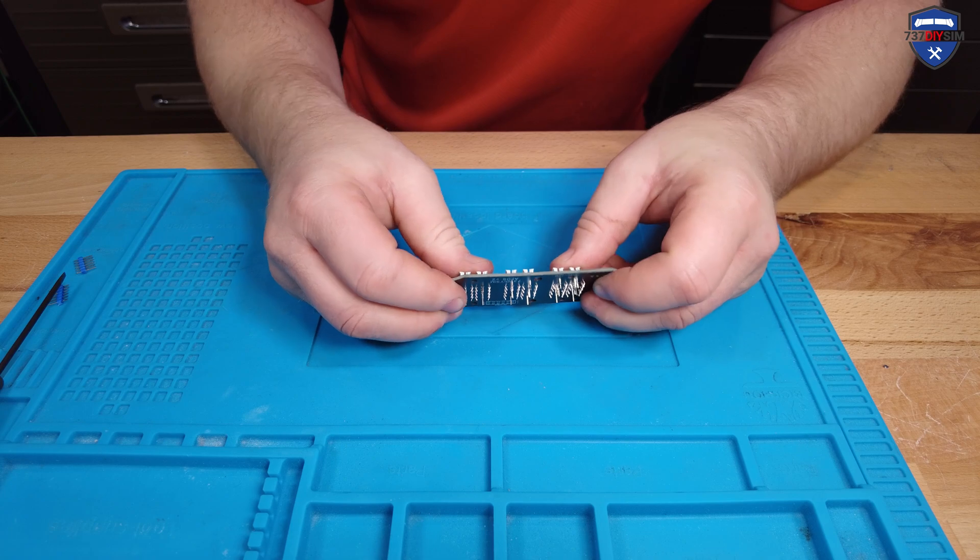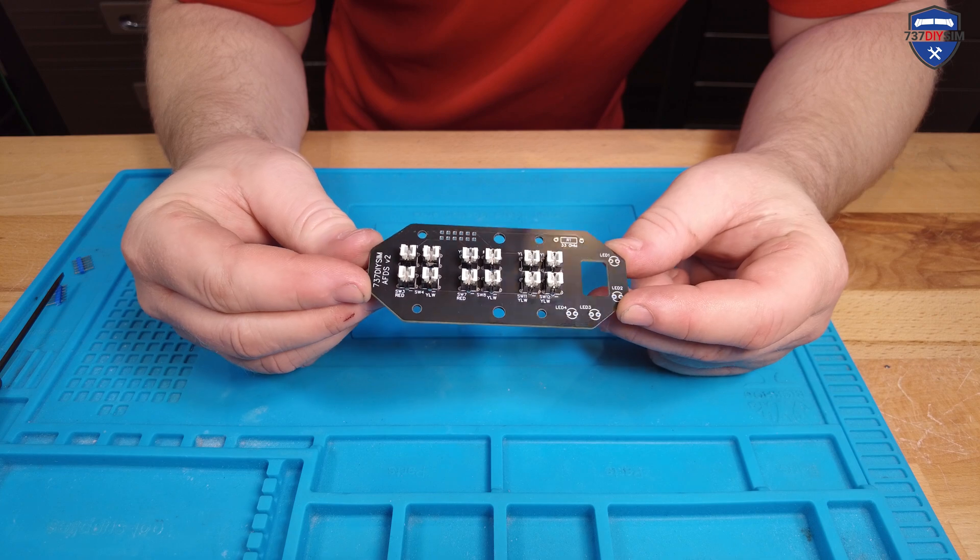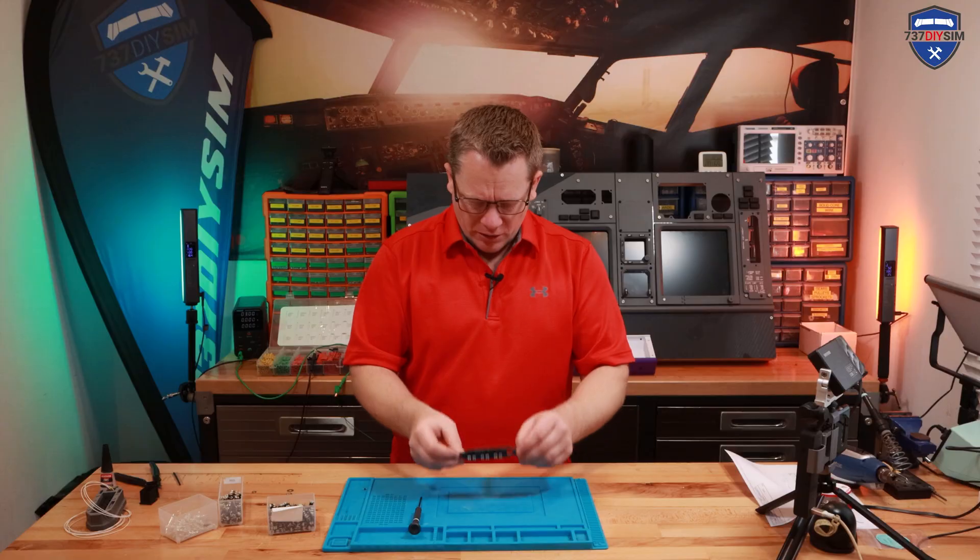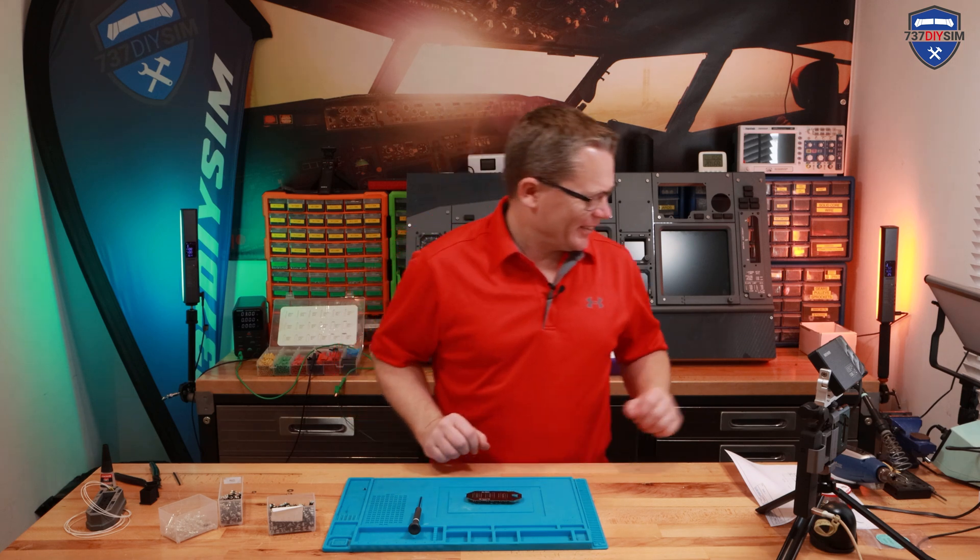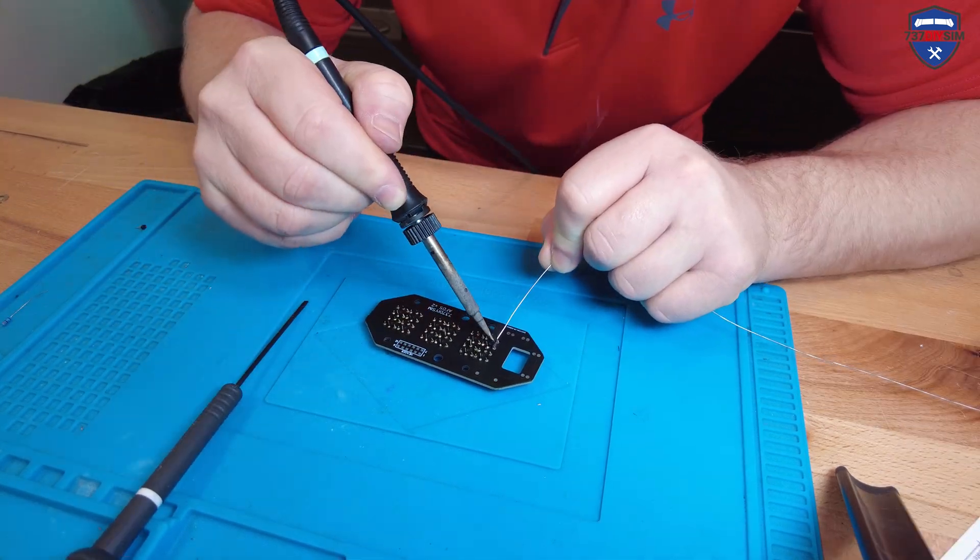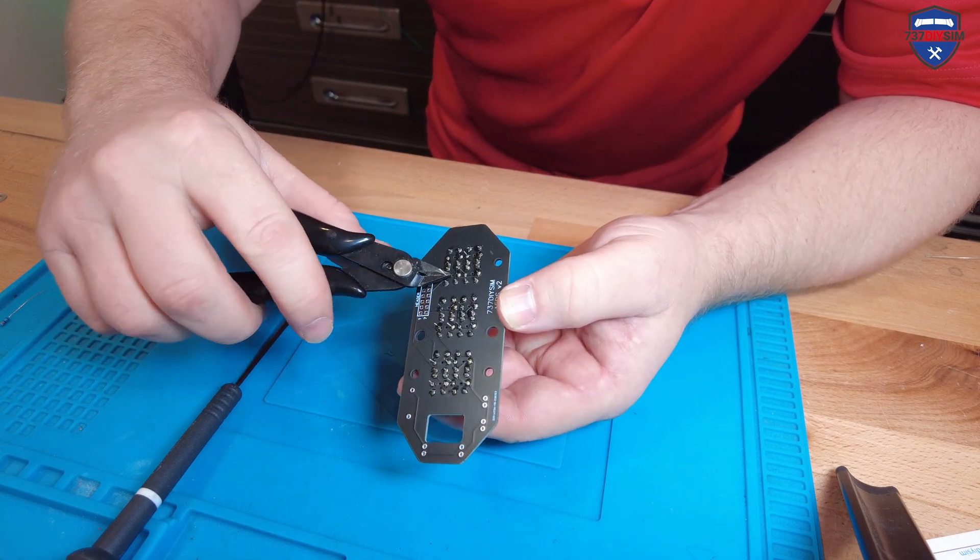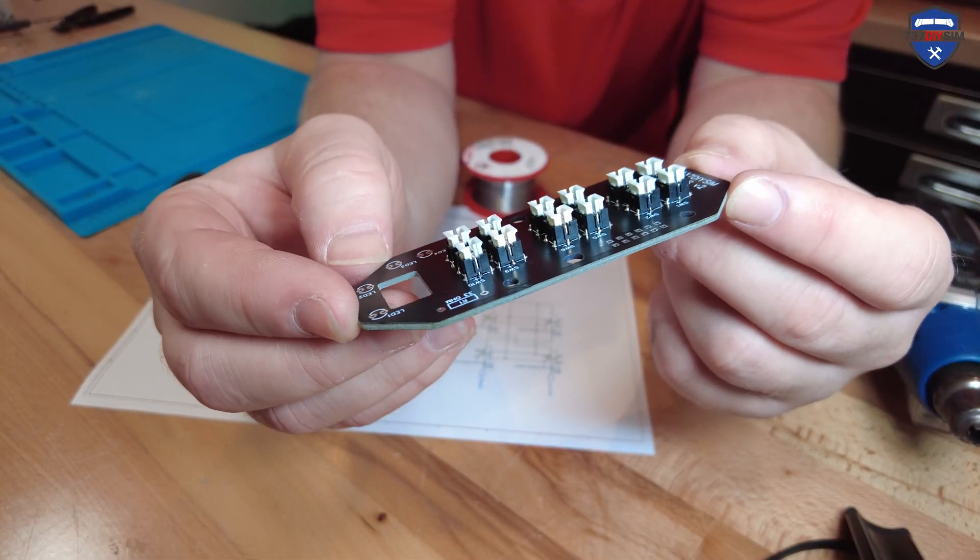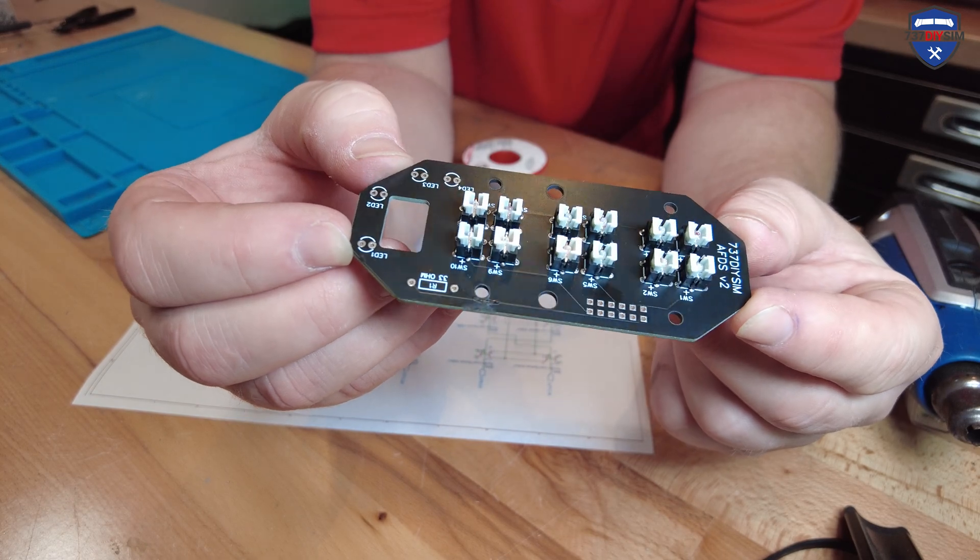Now before we go any further, you really want to make sure that they are all flushing at the same height. Otherwise, it's going to make pushing the buttons really quite awkward. We can put it on the mat and we can now get to soldering them in position. Now we'll give the LED legs a trim to make it look tidy. So before we go on to the next step, I just want to make sure that all those tactile LEDs are seated nice and level.